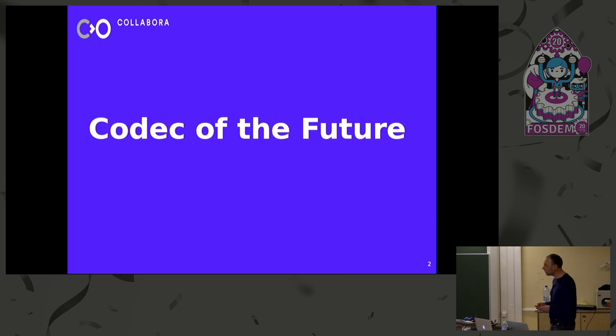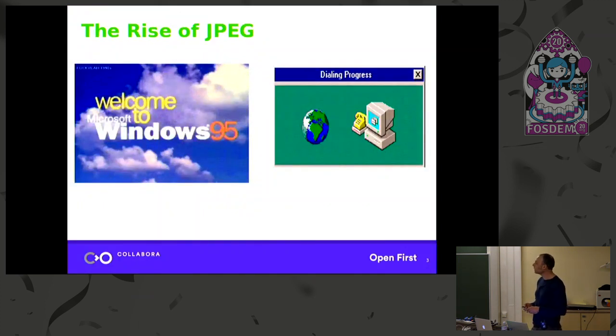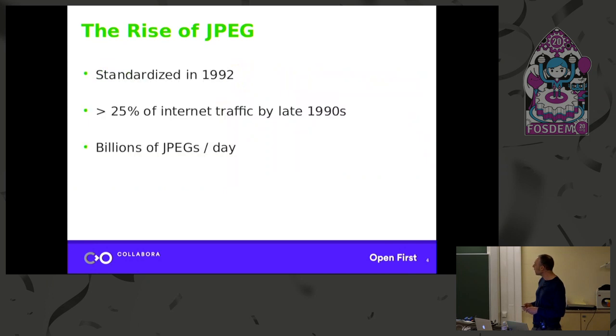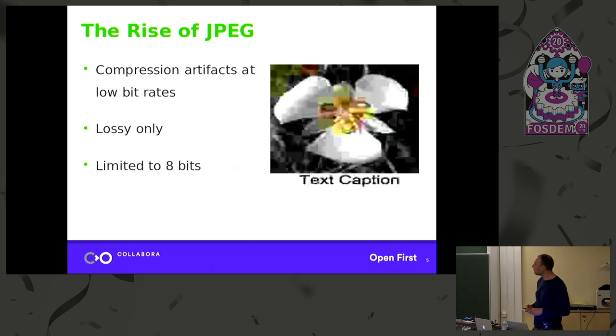To understand JPEG 2000, we have to go back to its predecessor, JPEG. I'm going to take you back into the 90s to the rise of JPEG. This was standardized in 1992 and really came of age with the dawn of the internet. By the end of the 90s, about a quarter of the internet traffic was JPEGs. Now we all know that was mostly porn, but still, that was an important way of rising up in the internet. And now we all have a JPEG decoder in our pockets in our phones. So it was extremely successful standard, but there were some issues.